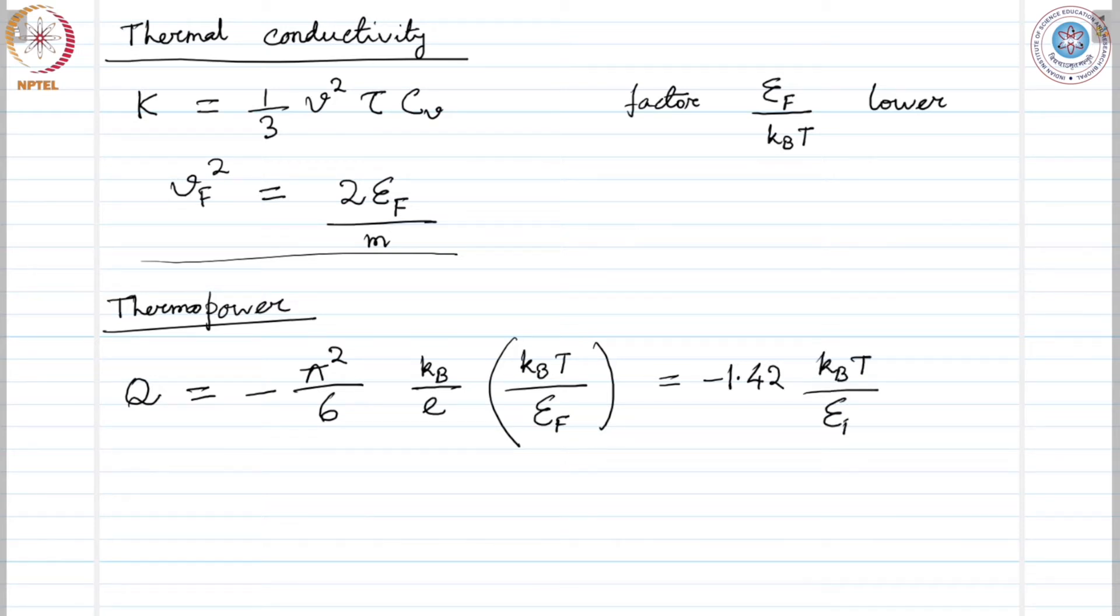This becomes of the order of minus 1.42 times k b t over epsilon f into 10 power minus 4 volt per kelvin which is smaller than the Druder's estimate.